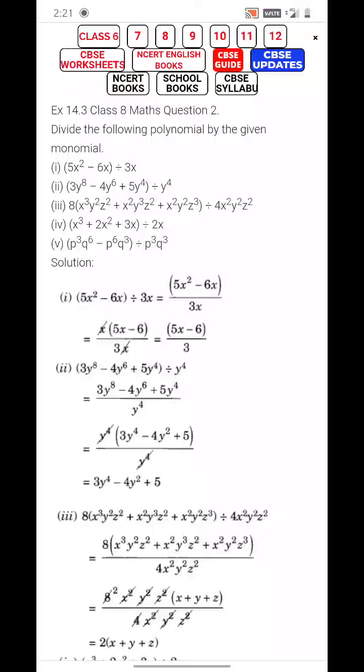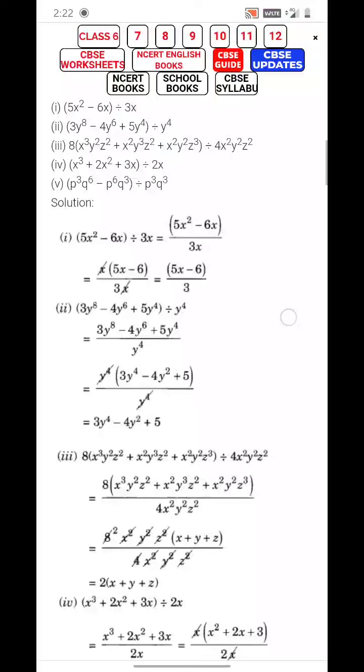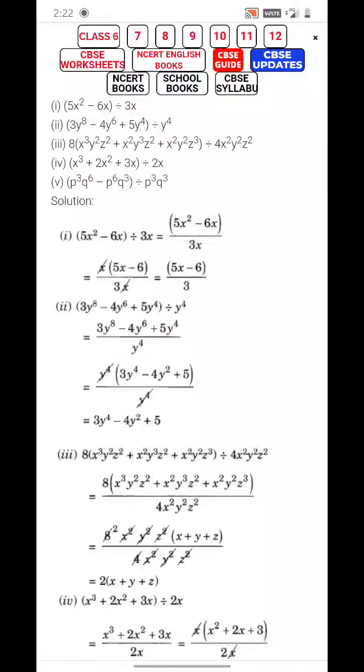In the numerator we have 5x² minus 6x divided by 3x. What we do is take the common factor. What is common between 5x² minus 6x? It is x. Taking x out, what remains inside is 5x minus 6 divided by 3x. Canceling x and x, what is left is 5x minus 6 divided by 3.